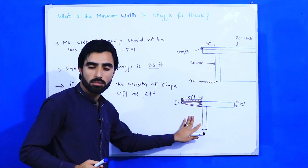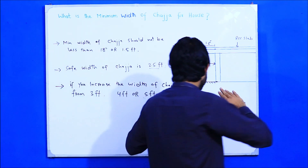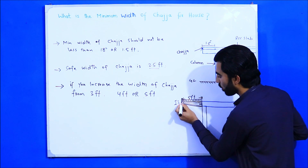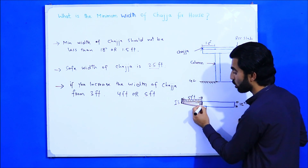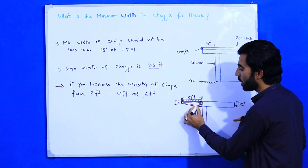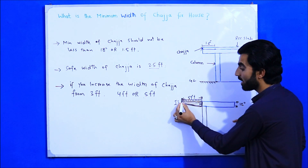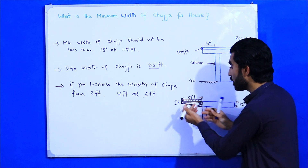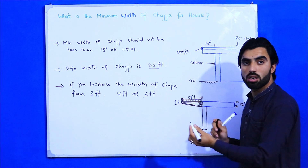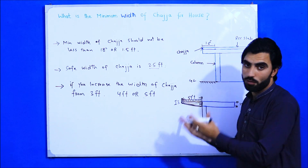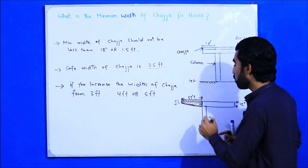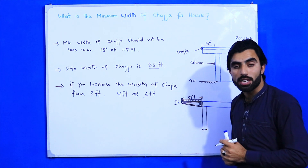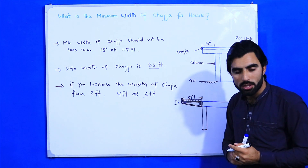At the support the beam is 12 inches deep, but when going to the chadja free end, the depth should be decreased. At the free end the depth should be about three to four inches — you cannot keep the full beam depth at the end when increasing the width of chadja. This tapering is the main point.